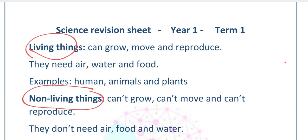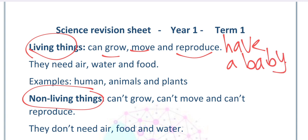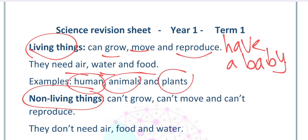You are a living thing. You can grow, you can move from a place to another, and we can reproduce — reproduce means have a baby. Living things need air to breathe, need water to drink, need food to eat. Living things like humans, like animals, and also like plants, because plants can grow and reproduce.